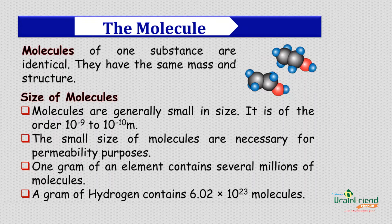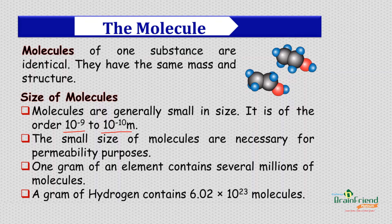Molecules of a substance are usually identical — they look alike and have similar structure and the same mass. The size of a molecule is between 10 to the power of minus 9 and 10 to the power of minus 10 meters. This small size is necessary because molecules are meant to move and interact with others. One gram of an element contains several millions of molecules, and a gram of hydrogen contains 6.02 × 10²³ molecules.